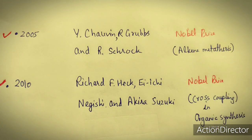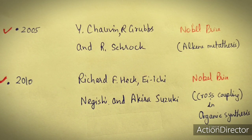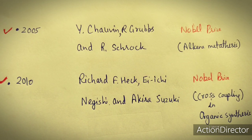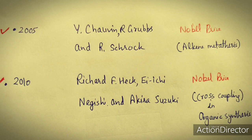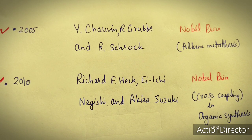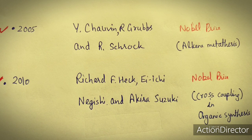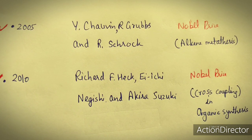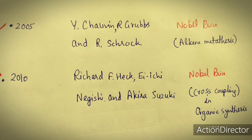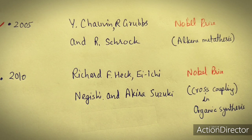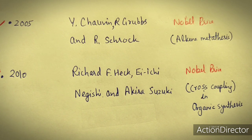More recently, in 2005, Y. Chauvin, Grubbs, and R. Schrock obtained the Nobel prize for their work on alkene metathesis.